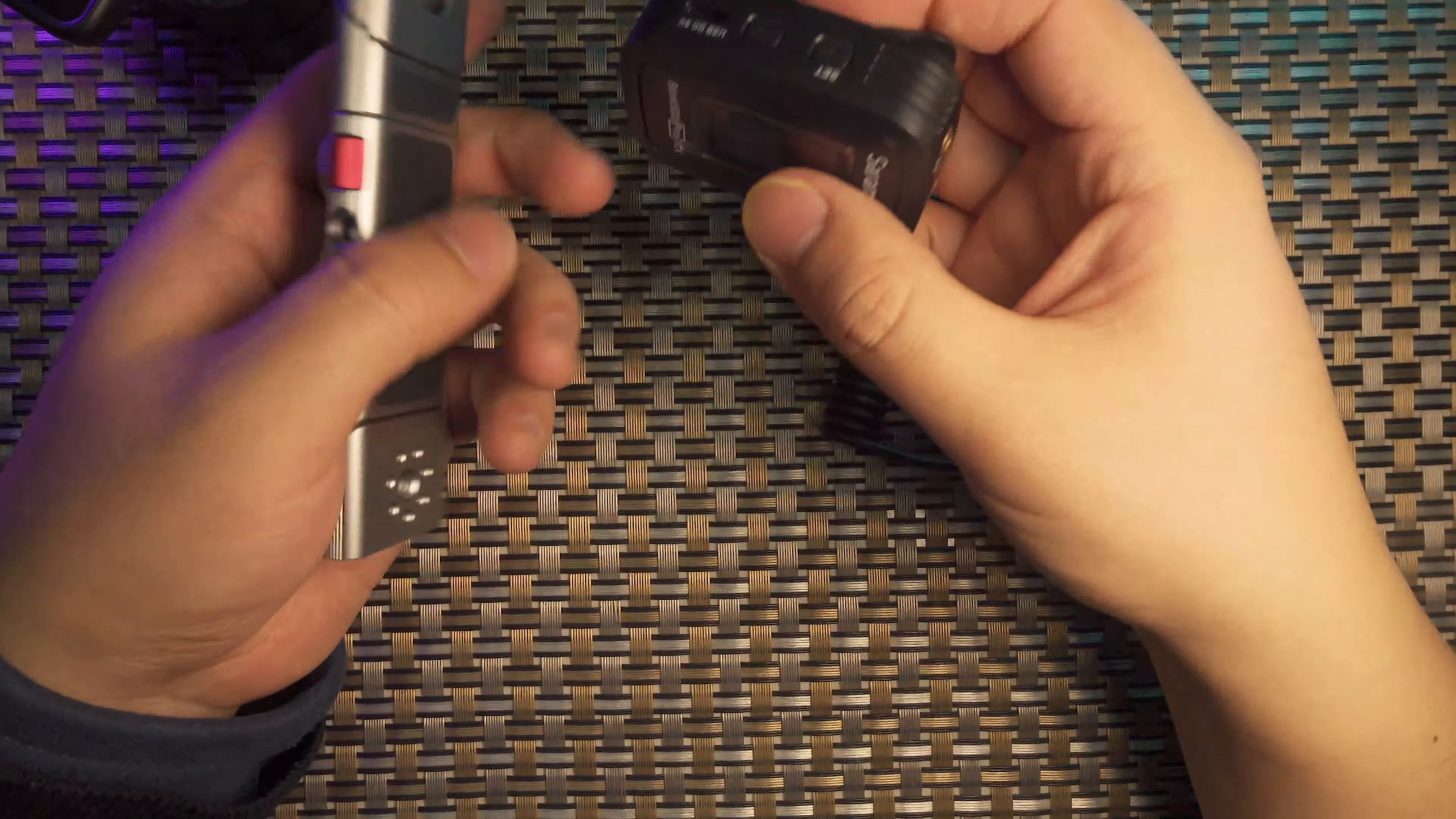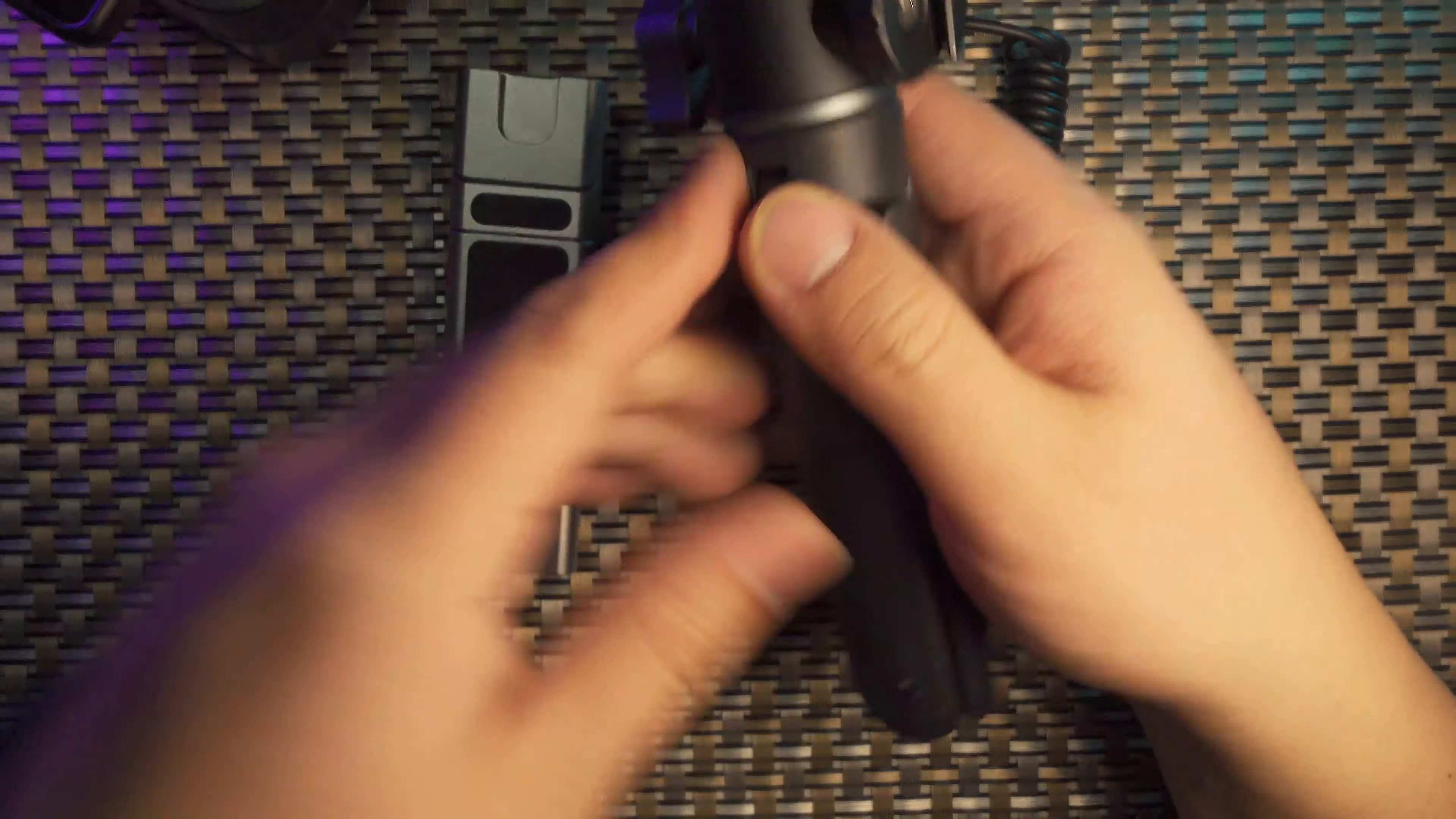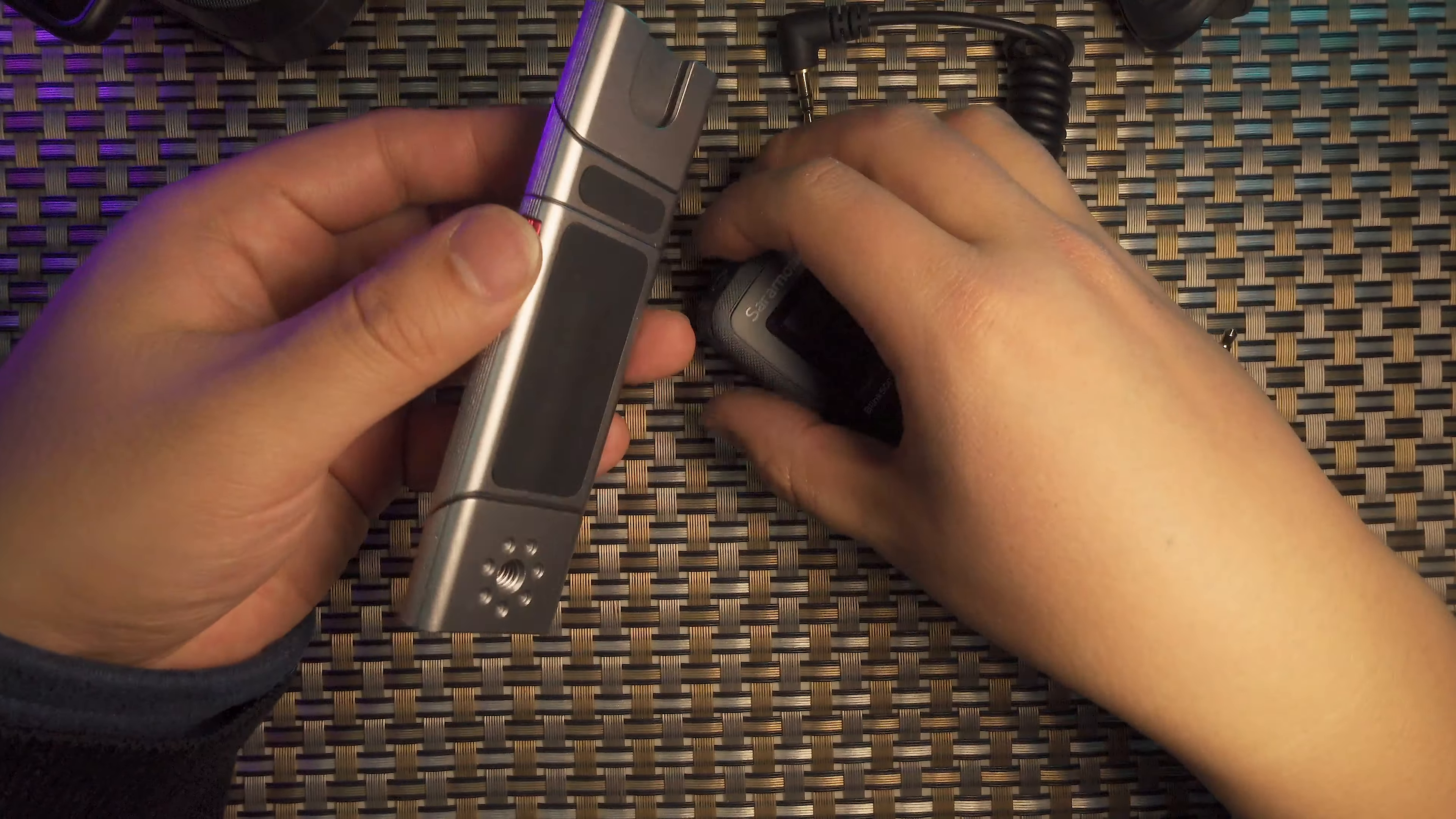Together with the wireless microphone system, the Saramonic Blink 500 B2, and the ST23 phone clamp, this is by far the very best and most interesting cell phone vlog setup for everyday vlogging. With a mini tripod, you can attach your phone clamp to any mini tripod you already have, and now vlog with your phone with very high sound quality and external light to make your footage more cinematic.